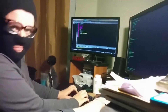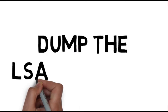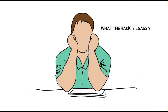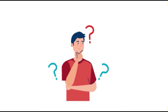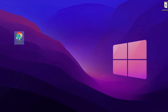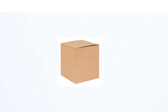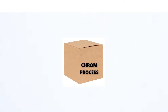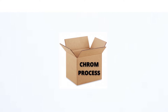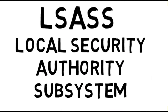Before we dive into the coding part, let's cover some fundamental concepts. We have mentioned that we are going to dump the LSASS process. But what exactly is LSASS? To understand that, let's first clarify what a process is. When you're running an application like Chrome on your computer, it operates as a process. Think of a process as a container that encapsulates the execution of a program. Inside this container there is a set of code that defines the Chrome process functionality — this is called threads. LSASS, Local Security Authority Subsystem, is also a process.